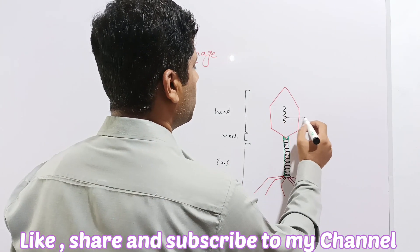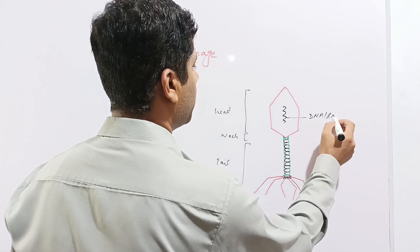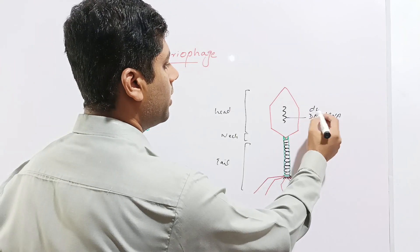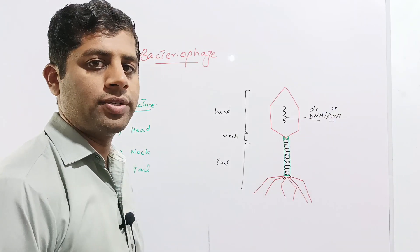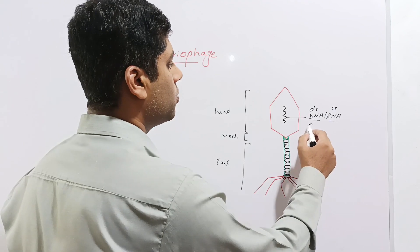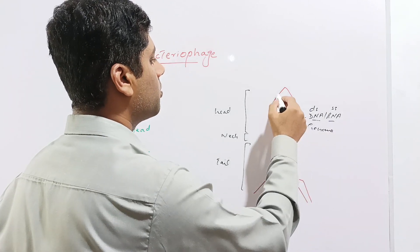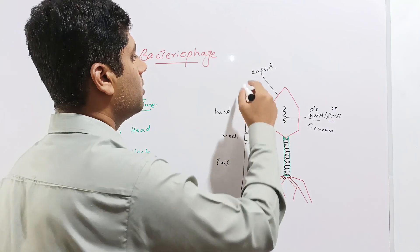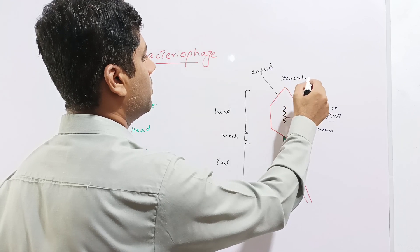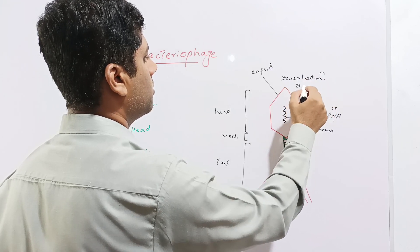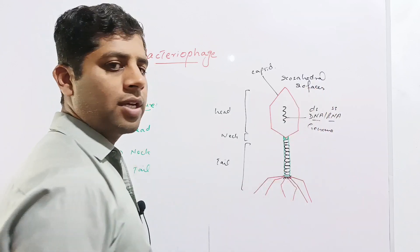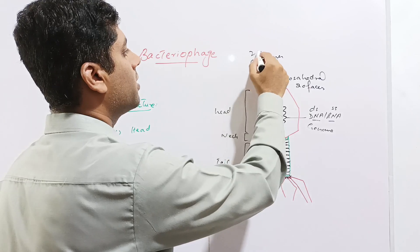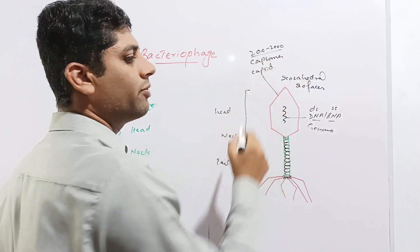Like other viruses, phage also has a genome, either DNA or RNA, but never both. The DNA may be double stranded and RNA may be single stranded. This RNA or DNA is called the genome of bacteriophage, and it is enclosed in a protein coat called capsid. This capsid has 20 faces and is therefore called an icosahedral capsid. It is made up of capsomers, and it is estimated that there are 200 to 2000 capsomers present in the capsid of the bacteriophage.